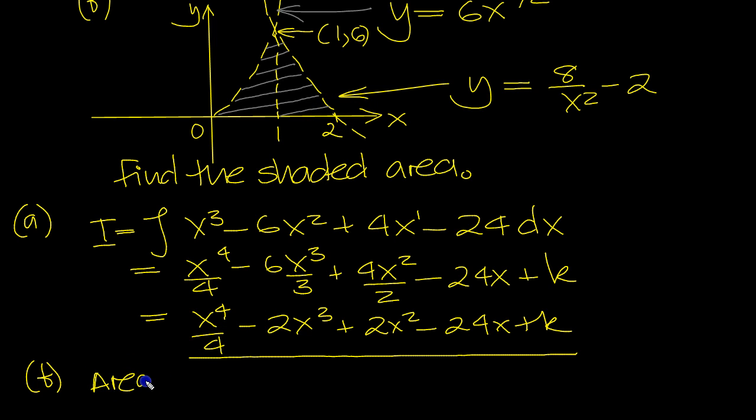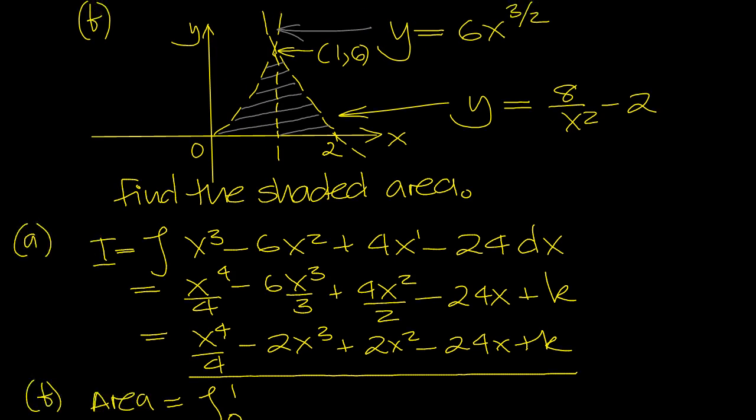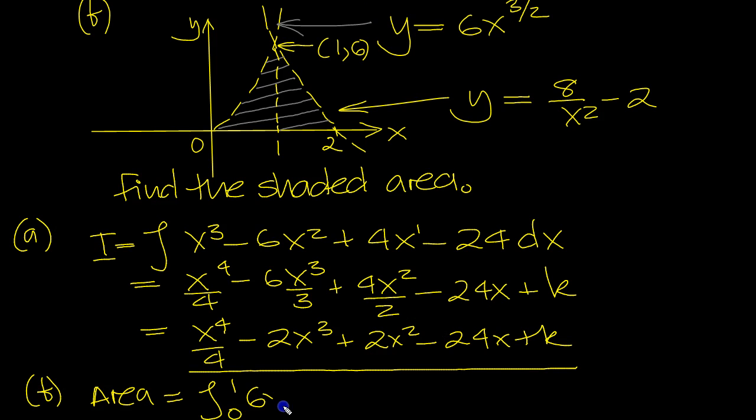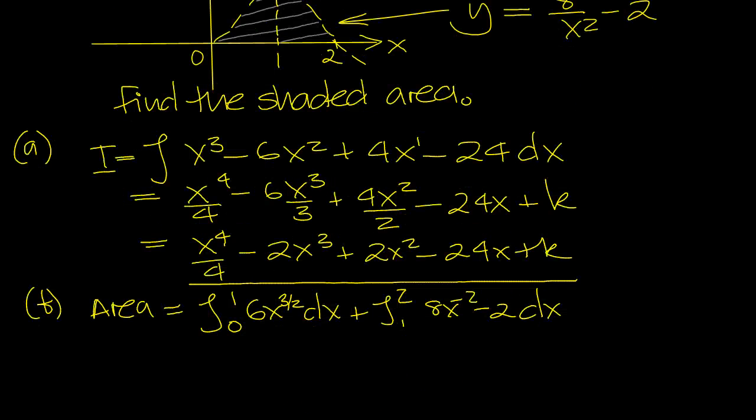So the area will equal the integral between 0 and 1 on this side of these strips. Integral y dx, and in that case is 6x to the 3 over 2. And then plus the area between 1 and 2 of this one. 8x to the minus 2, that is, isn't it? Minus 2. Just move the x squared up to ground level, flip the index. dx. So there's the two integrals then added together to get the area.